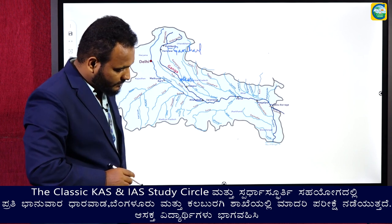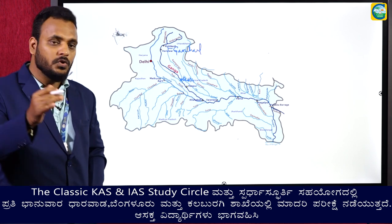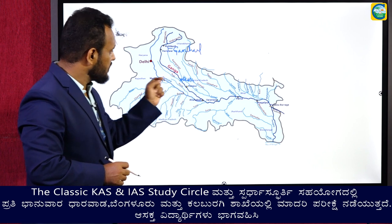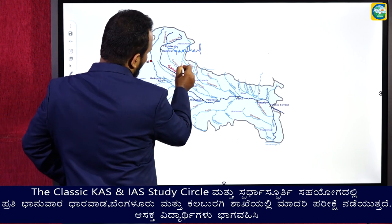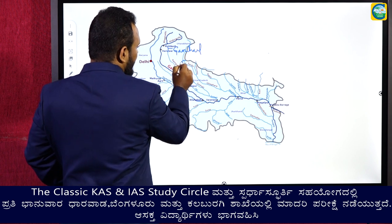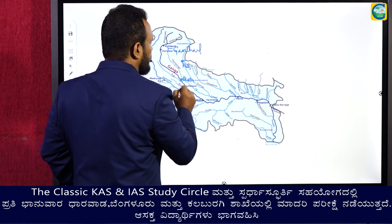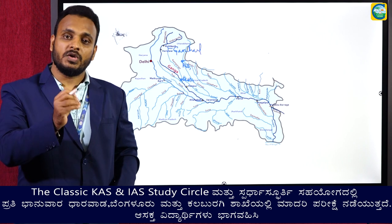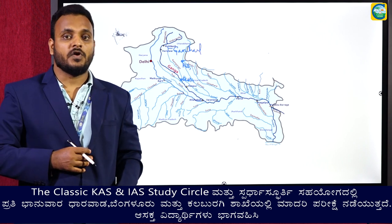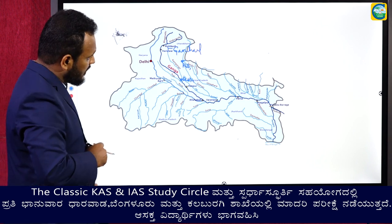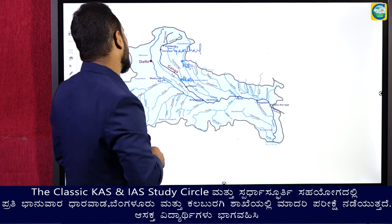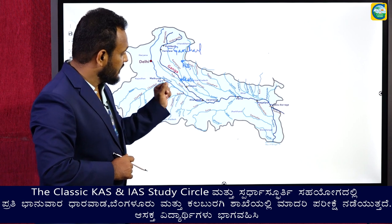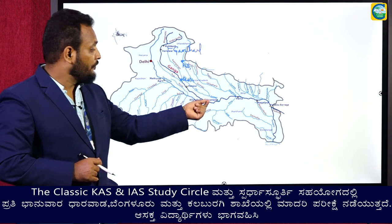Gomti is a left bank tributary. The Gomti river originates north of Pilibhit in UP itself — if asked the origin or source point of Gomti river, you must say it originates north of Pilibhit in UP. Gomti goes and joins Ganga very near to Varanasi.